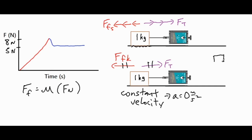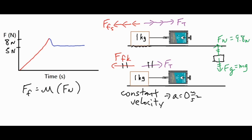In the free body diagram, the force of gravity pulls the object down and the normal force pushes up — these two are equal and opposite. The force of gravity is mg, so mass times 9.8. Each mass is exactly one kilogram, so 1 × 9.8 = 9.8, meaning the normal force is also 9.8 newtons.